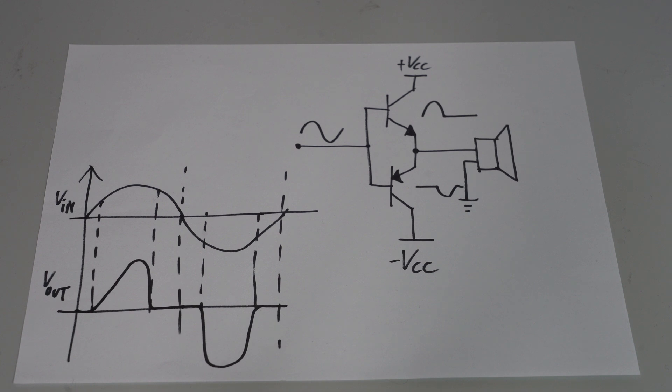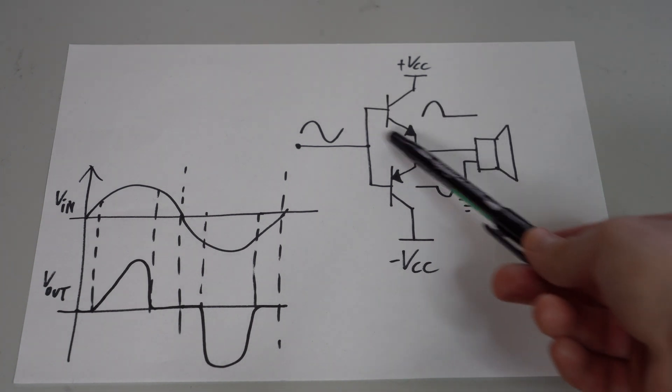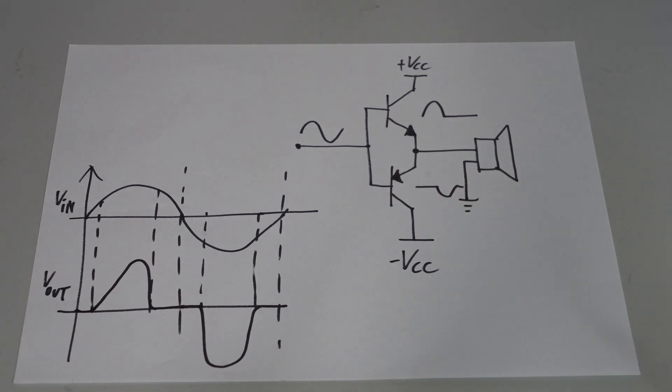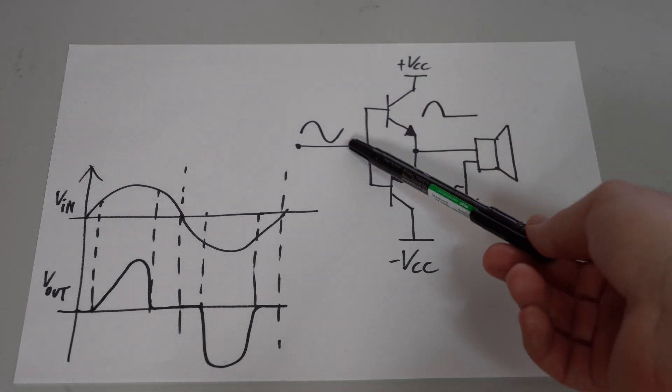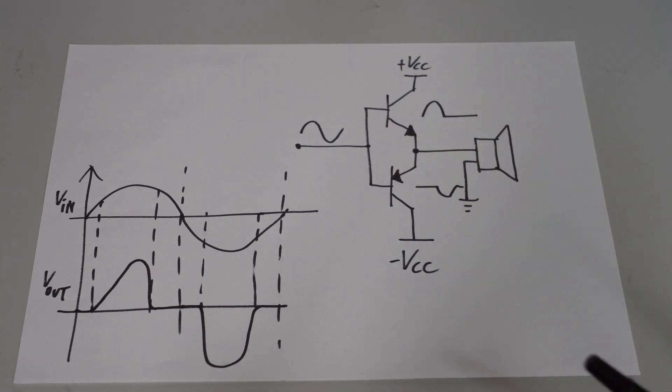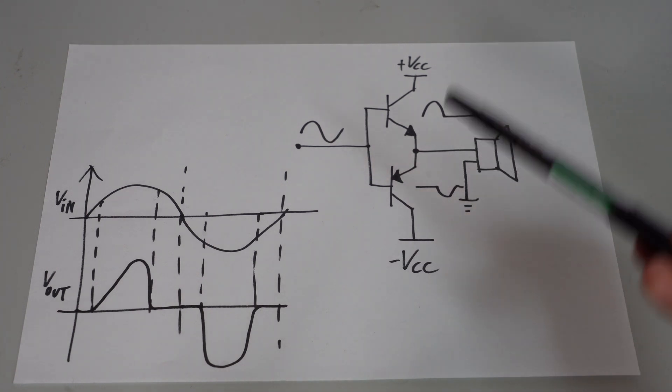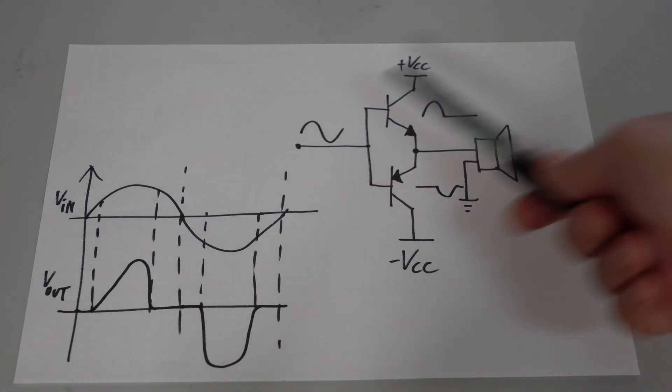And that is crossover distortion. Now if you know a thing or two about bipolar transistors, you probably know that they require a certain base to emitter voltage in order to conduct. For example the top NPN transistor needs around 700mV from base to emitter in order to conduct. Something similar happens for the bottom transistor of course. This implies that in order to make this transistor conduct, the input has to be at least 700mV. And similarly, if you want this bottom transistor to conduct, we need the input to be minus 700mV or lower. And in between, none of these transistors conduct.